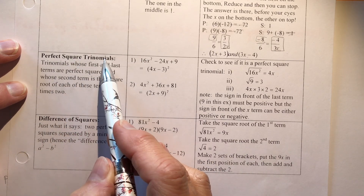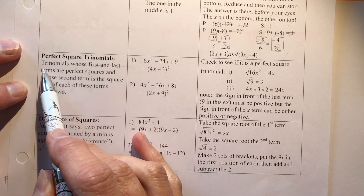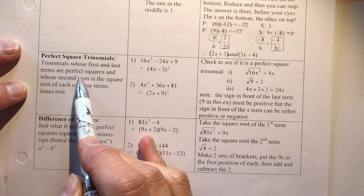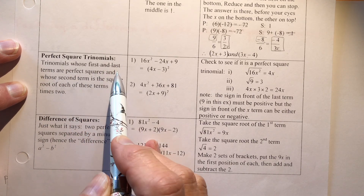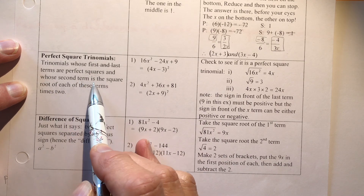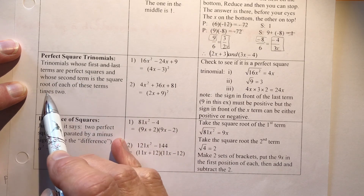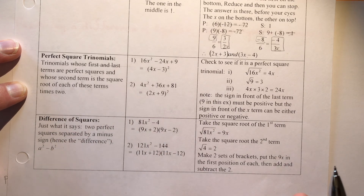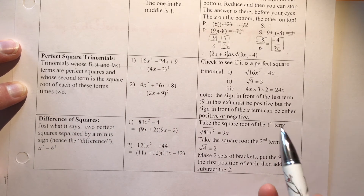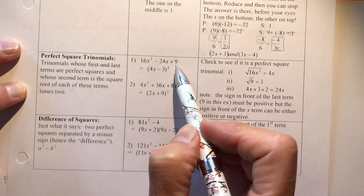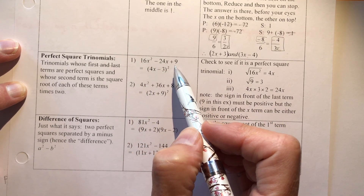Perfect square trinomials are trinomials whose first and last terms are perfect squares, and whose middle term is the square root of each of those two terms multiplied together times two. That sounds complicated until you just take a look at an example.